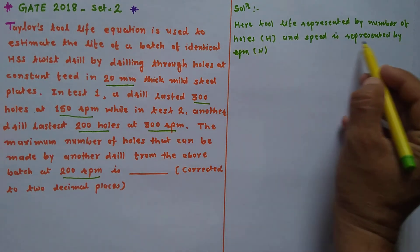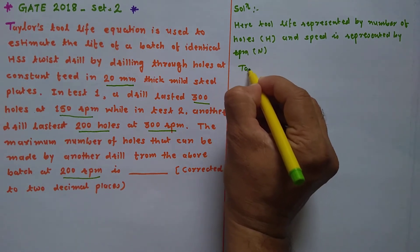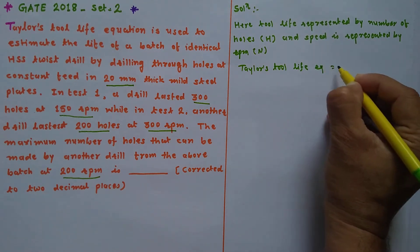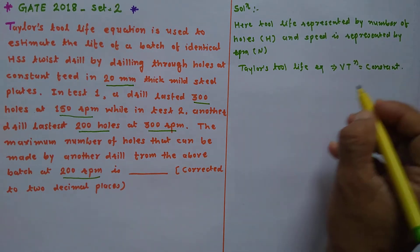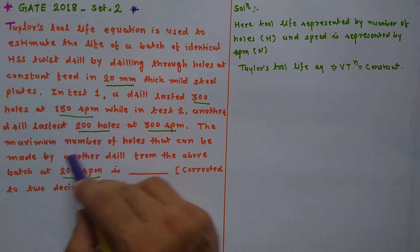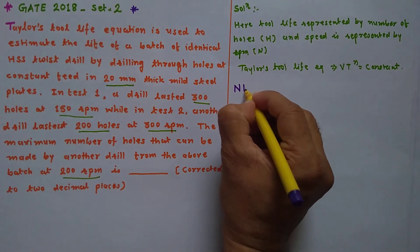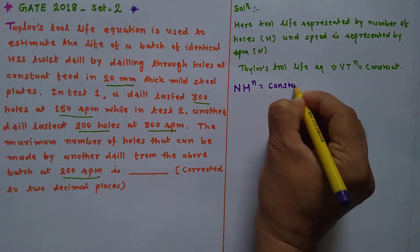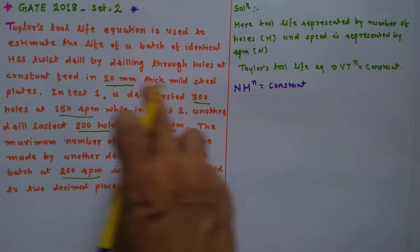Here the tool life is represented by the number of holes H, and the speed is represented by n. We know that Taylor's tool life equation is V·T^n = constant. Since all conditions are the same for the different batches except the number of holes, we can write it as: n_H raised to n equals constant, meaning speed times number of holes raised to n equals constant.